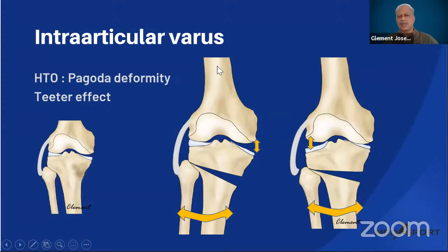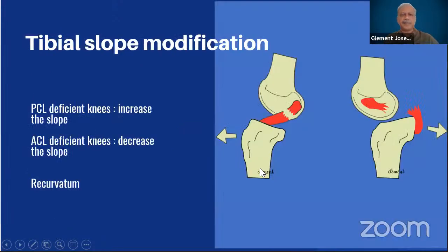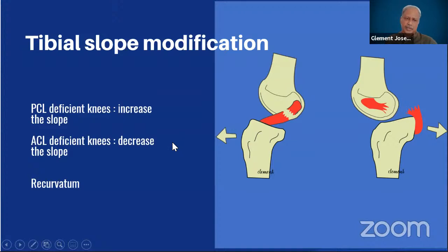Intra-articular varus presents a second problem: an HTO will not change the incongruence of the tibial articular surfaces — the pagoda deformity remains, causing what is known as a teeter effect. One should not perform an HTO for significant depressed medial tibial condyle fractures. Regarding tibial slope: for PCL-deficient knees with osteotomy, you can increase the slope to compensate; for ACL-deficient knees, decreasing the slope can support the ACL. Recurvatum corrections using slope changes are also possible.